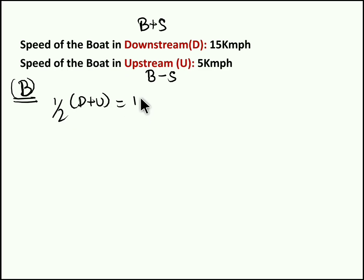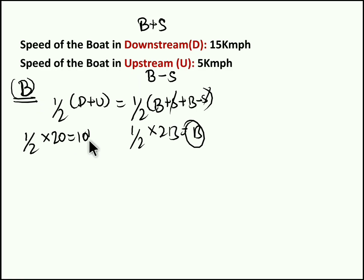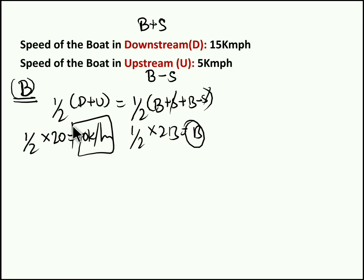Half of downstream plus upstream is half of (b + s) + (b − s). The plus s and minus s cancel, so half of 2b equals b — you get the boat speed. Speed of boat in still water equals half of (D + U). Here D is 15 and U is 5, so 15 plus 5 is 20, and half of 20 is 10 kilometers per hour. Using the same values from the previous two cases — downstream 15 km/h and upstream 5 km/h — we correctly recover the boat speed of 10 kilometers per hour.